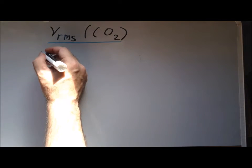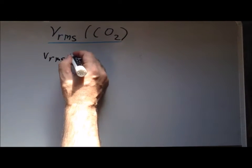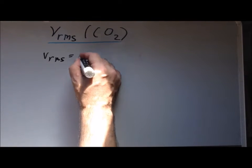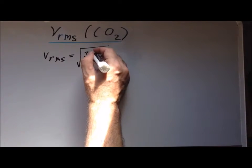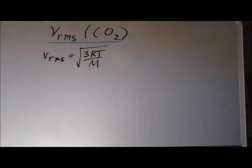First, recall that the root mean squared velocity can be calculated as the square root of 3RT divided by M, where R is the gas constant, T is the thermodynamic temperature, and M is the molar mass.